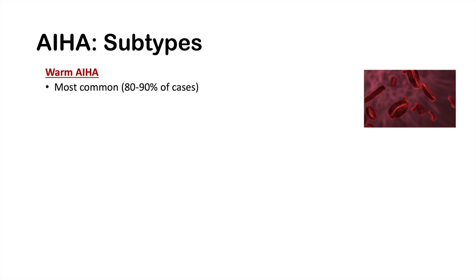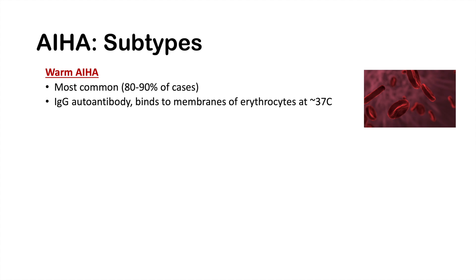Warm autoimmune hemolytic anemia is the most common type, accounting for about 80 to 90% of cases. It is caused by an IgG autoantibody — IgG is the culprit — and it binds to membranes of erythrocytes around 37 degrees Celsius, the basal body temperature. It causes extravascular hemolysis and can lead to splenomegaly.